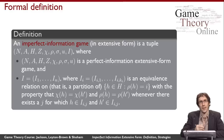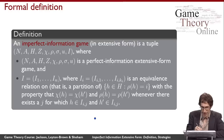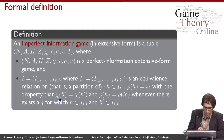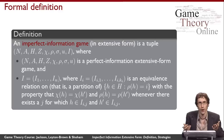To make this definition work, we need two restrictions. First, if two choice nodes are in the same equivalence class, they must belong to the same player — otherwise you'd be able to tell them apart because different players would be acting. Second, the two choice nodes must have the same set of available actions, because if the player can't tell them apart, he still needs to know what actions he can take.